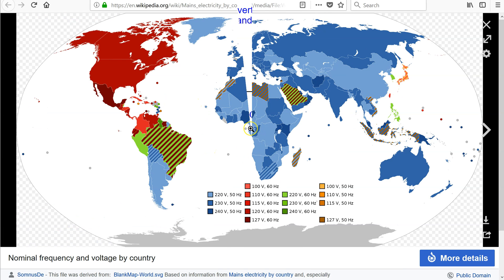This map here, which is available on Wikipedia, shows the nominal voltage and frequency used by different countries in the world. In USA and Canada, 120V RMS at 60 Hz is used. In Australia, 240V RMS at 50 Hz is used.